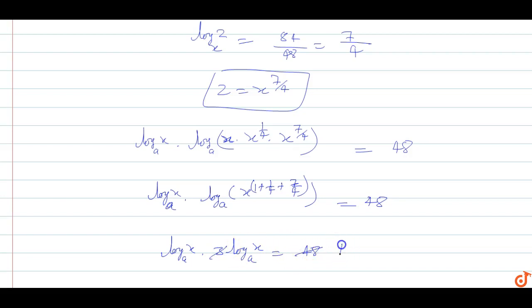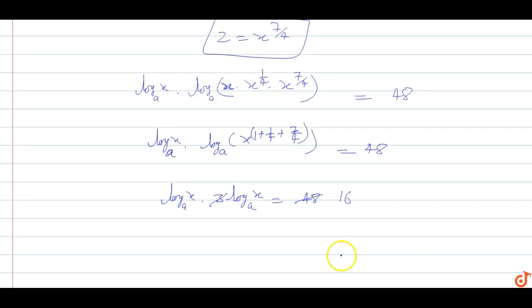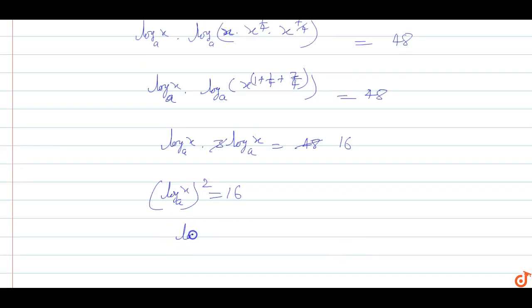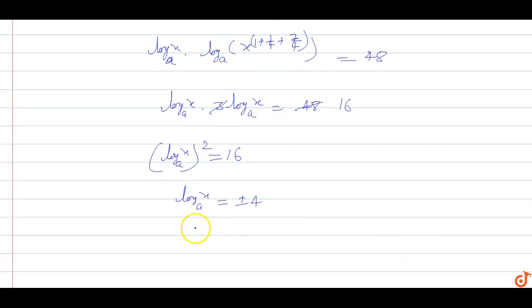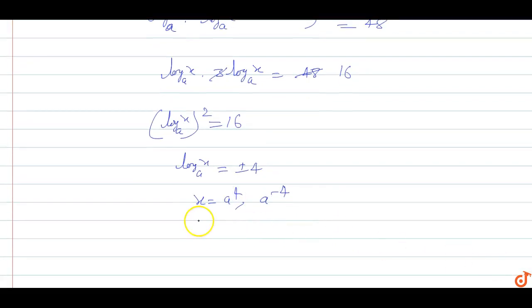From 3 times (log x base a)² = 48, dividing by 3 gives (log x base a)² = 16. Therefore log x base a equals plus or minus 4, which means x equals a to the power 4 or a to the power minus 4.